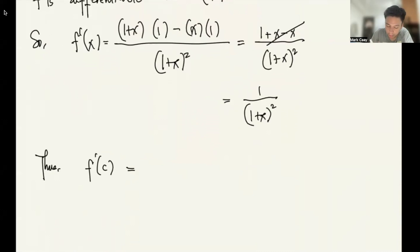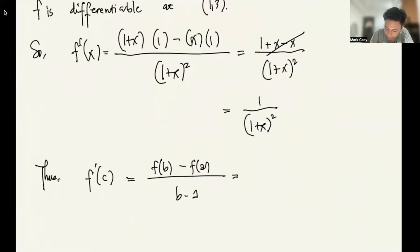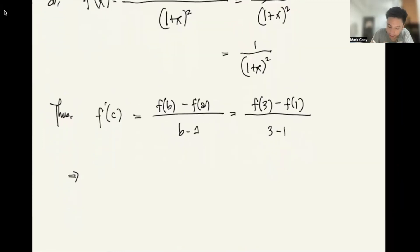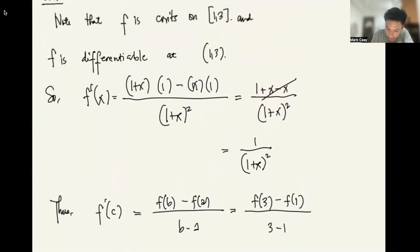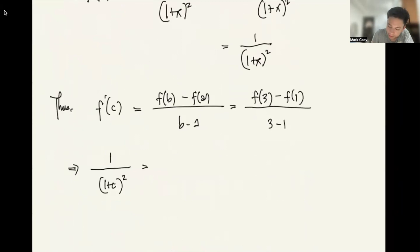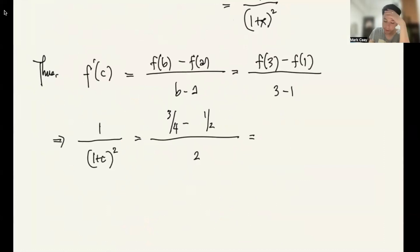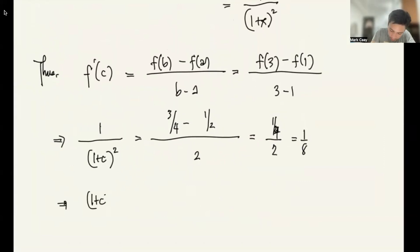So f'(c) equals f(b) minus f(a) all over (b-a), which equals f(3) minus f(1) all over (3-1). This implies f'(c) is 1 over (1+c) squared equals, what is f(3)? The original function is x/(1+x), so that is 3/4 minus 1/2 all over 2. What is this equal to? This is 3/4 minus 1/2 so 1/4 over 2. This equals 1/8.